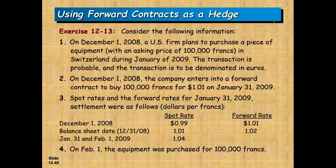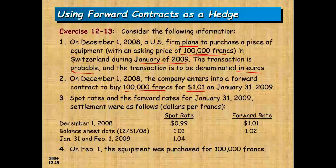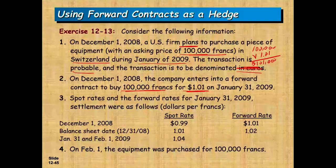The best way to illustrate this is to work an example. On December 1st, a U.S. company plans — notice plans — to purchase a piece of equipment with an asking price of 100,000 Swiss francs during January 2019. The transaction is probable and denominated in Swiss francs. The company enters into a forward contract to buy 100,000 francs at 1.01, meaning their commitment for this whole thing is $101,000.